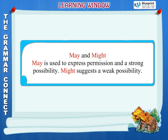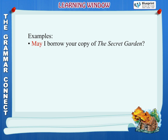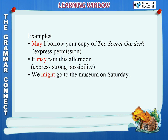May and might. May is used to express permission and a strong possibility. Might suggests a weak possibility. Examples: May I borrow your copy of The Secret Garden? — express permission. It may rain this afternoon — express strong possibility. We might go to the museum on Saturday — express weak possibility.